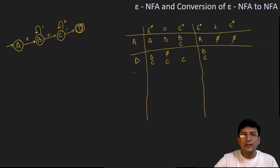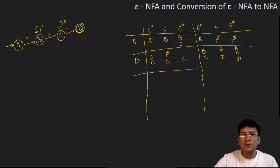Now taking the transition from one: B and C are the epsilon closure of B. By getting symbol one at B, B remains at itself. And C on getting input symbol one moves to state D. The epsilon closure of B is {B, C} and epsilon closure of D is {D}. So the union of these three sets will be taken when we write the final transition table.